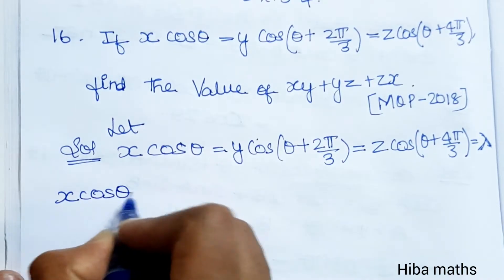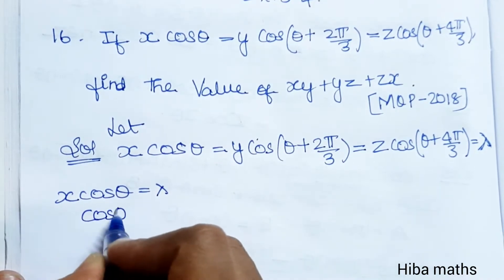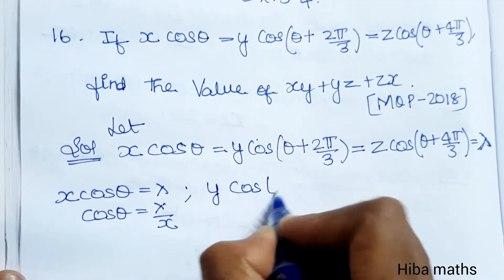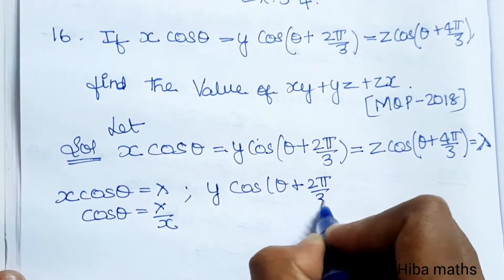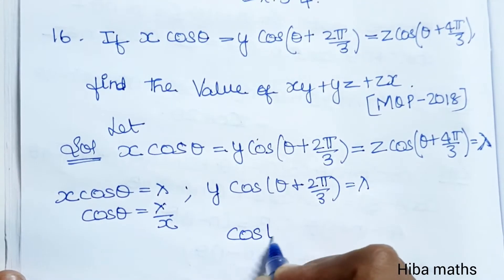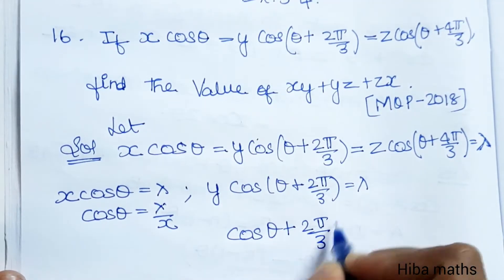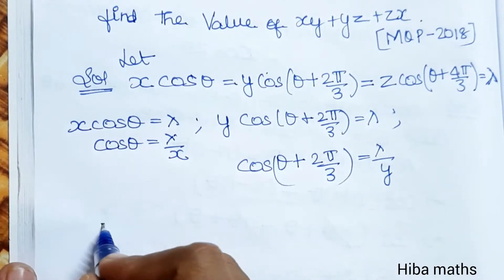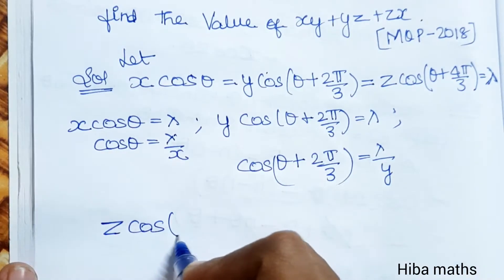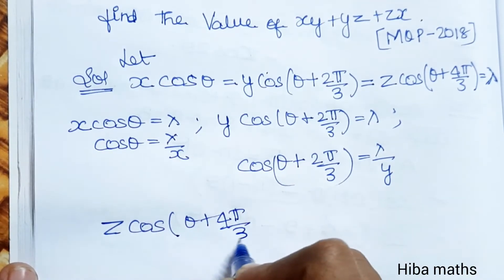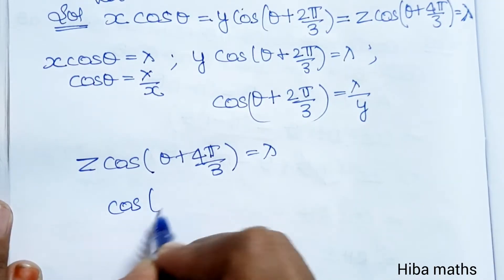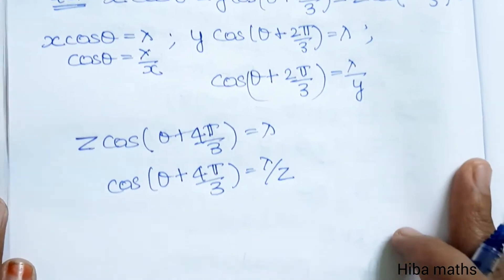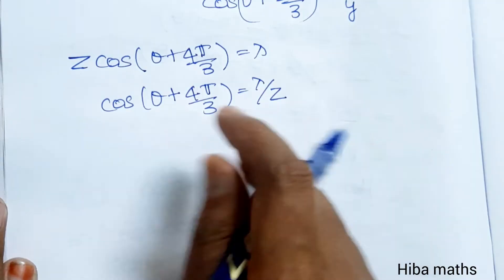From the first term: x cos θ = λ, so cos θ = λ/x. From the second term: y cos(θ + 2π/3) = λ, so cos(θ + 2π/3) = λ/y. From the third term: cos(θ + 4π/3) = λ/z. Now comparing all three, we add: cos θ + cos(θ + 2π/3) + cos(θ + 4π/3) = λ/x + λ/y + λ/z.